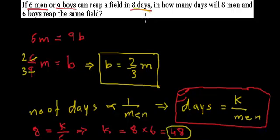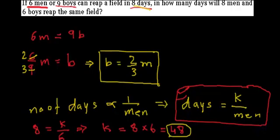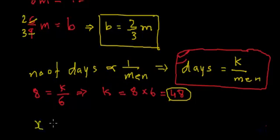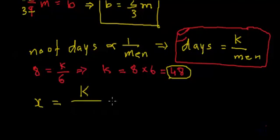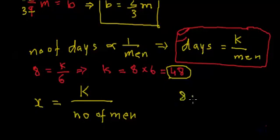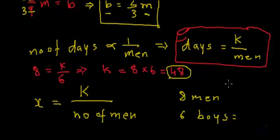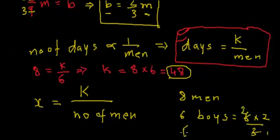Now what they are asking is: how many days will eight men and six boys take to reap the same field? Let's assume the number of days required is x. In this case we have both men and boys working. Since one boy's working capacity is two-thirds of a man, the working capacity of six boys will be six multiplied by two-thirds. Three ones are three, three twos are six — that equals four. So six boys are equal to four men.